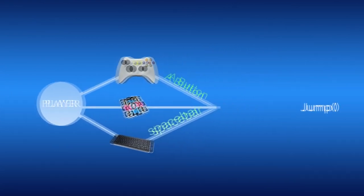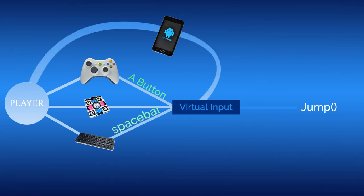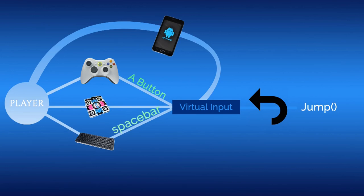What if we created another layer in between the input and the game? This layer would be able to read inputs from all the different controllers and then convert it back into a single virtual input. In our code, we would then use that virtual input to call our functions. This way, if we end up adding more controllers, we would only have to connect them to our new virtual input and not to every single piece of code using these inputs. This also gives us more control over what is sent to our game — we could be blocking or altering inputs while they're being sent. So let's go ahead and implement that new layer.